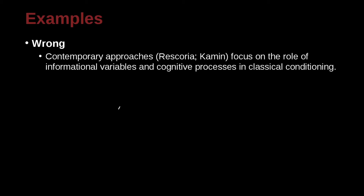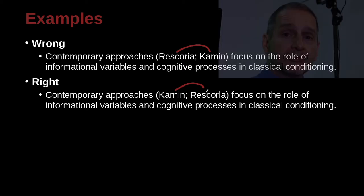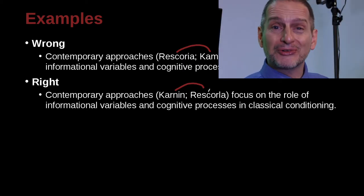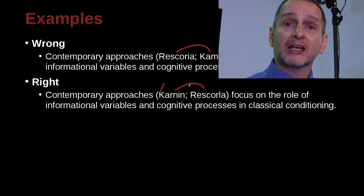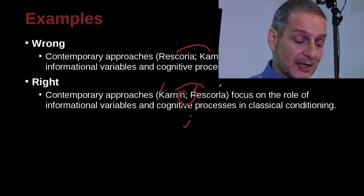Contemporary approaches — Rescorla and Common, Haman — focus on the role of informational variables and cognitive processes in classical conditioning. Here we have the problem of which source goes first. As in APA, we have rules about this: when you have multiple authors inside the same parenthetical, you use alphabetical order — in this case K before R — and don't forget the semicolon to separate the two separate sources.